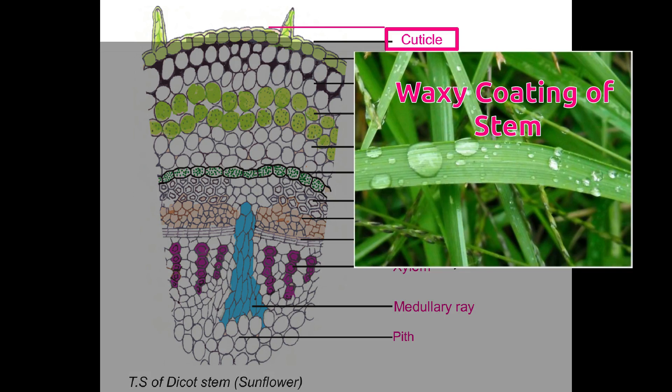Cuticle is the outermost layer in the stem. It is coated with wax which stops water from going into or out of the stem.